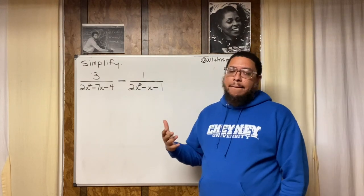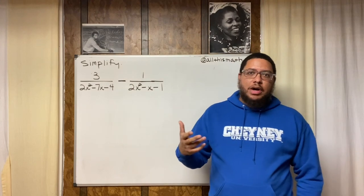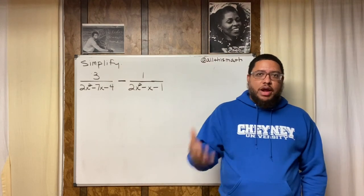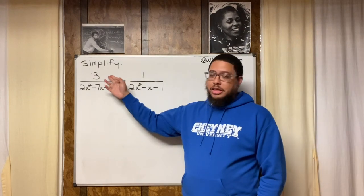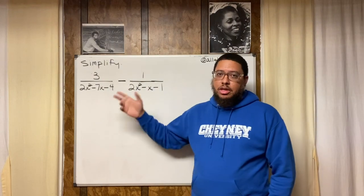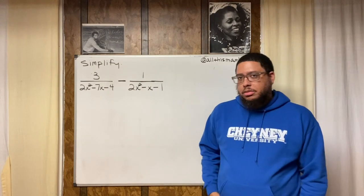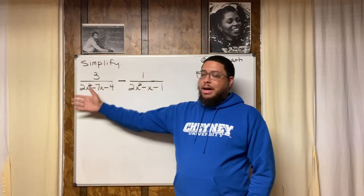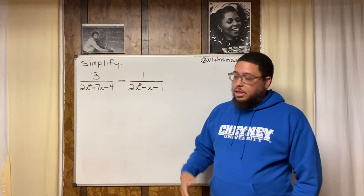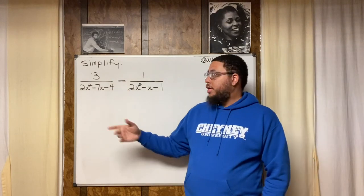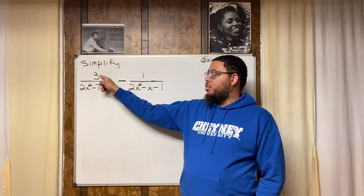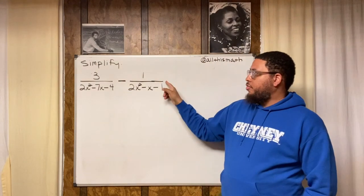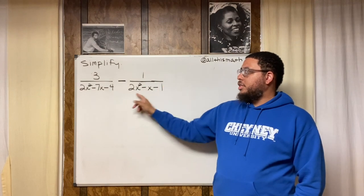What are we doing today? We are going to simplify rational expressions. Why are they called rational expressions? Basically because they're fractions — fractions are rational expressions. Even though this looks a little more complicated than a typical fraction, it's still a fraction. You got a fraction bar, a numerator, and all of this is a denominator.